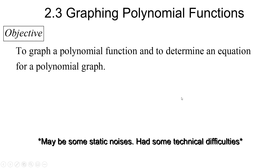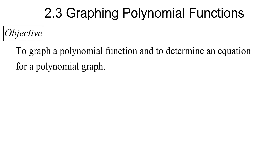Today we're going to talk about 2.3 graphing polynomial functions. The objective will be to graph a polynomial function and to determine an equation for a polynomial graph. When we do our graphs by hand, we are really focusing today on the roots of the equation — those are going to be the zeros of the graph, or where the graph crosses the x-axis.